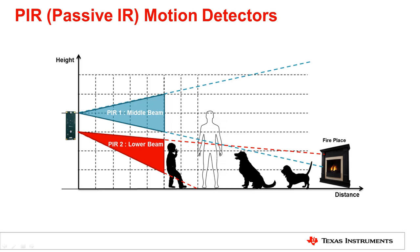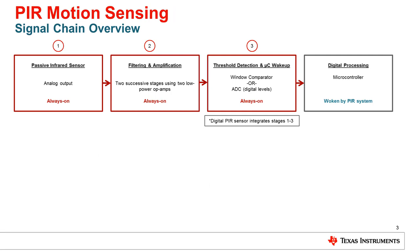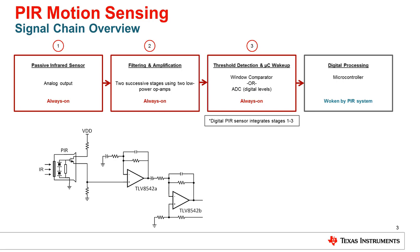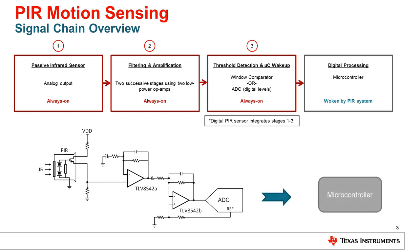To start, let's look at the overall PIR signal chain. Here are the four main blocks that make up a PIR motion sensing system. First, we start with the PIR sensor, which outputs a waveform depending on the IR energy it detects. Stage two performs signal conditioning to prepare the input for detection. And stage three is often an ADC that compares the cleaned-up signal to an adjustable internal threshold. If the signal exceeds a threshold, it wakes up the microcontroller and lets the system know that something is detected. It's important to note that the ADC can be discrete, as shown here, or integrated into the microcontroller.